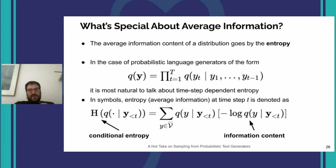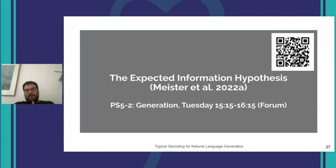Average information often goes by another name: entropy. To introduce notation, in the case of probabilistic language generators, it is most natural to talk about the time-step-dependent entropy — a conditional entropy typically denoted H, which is the expectation of the information content. Information content in this context is the negative log probability of the individual token.